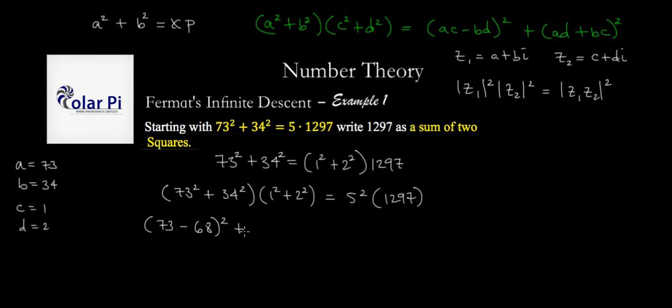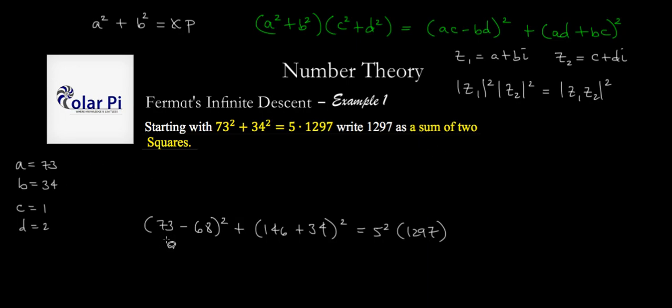And then plus ad plus bc squared. So ad is 73 times 2, so that's 146, and then plus bc, so that's 34 times 1, so that's 34. And then this squared will have to equal 5 squared times 1297.